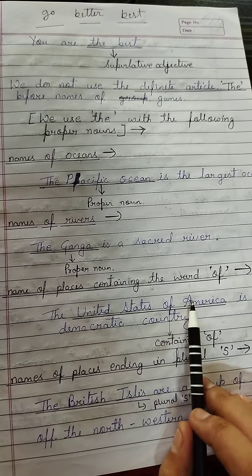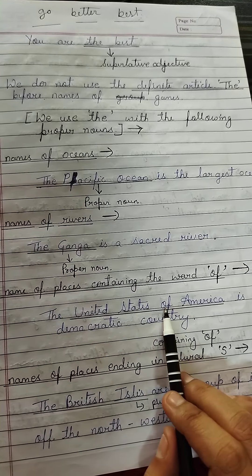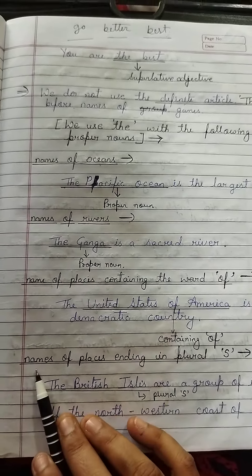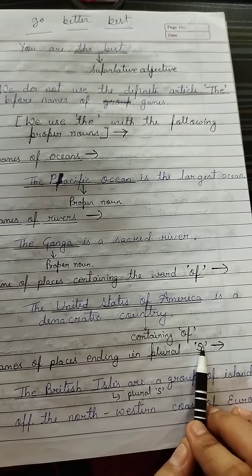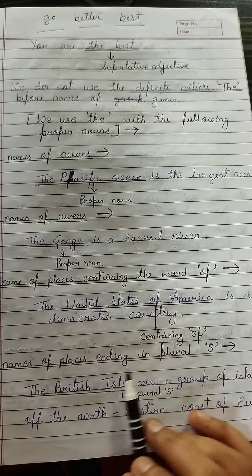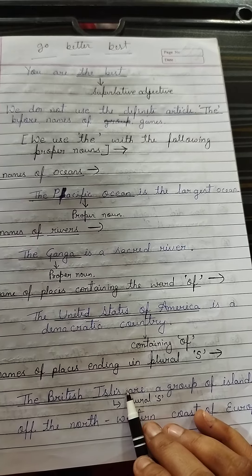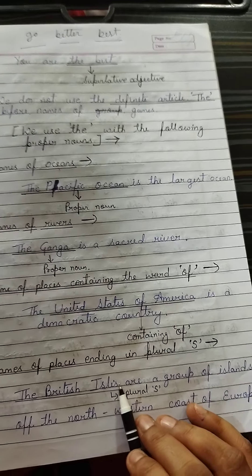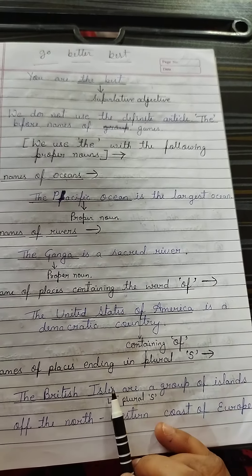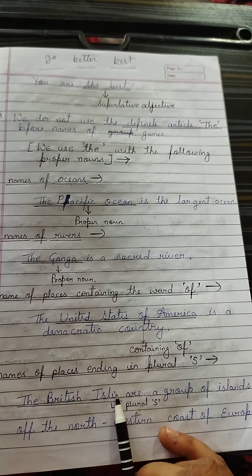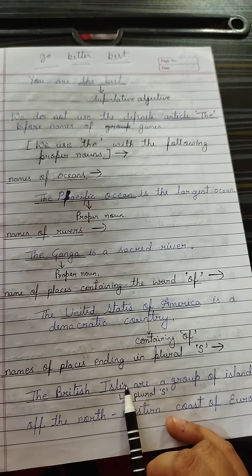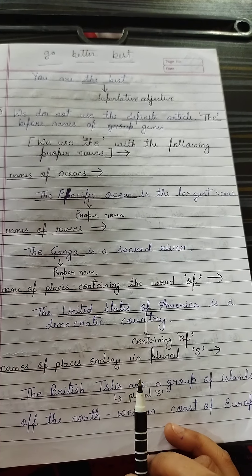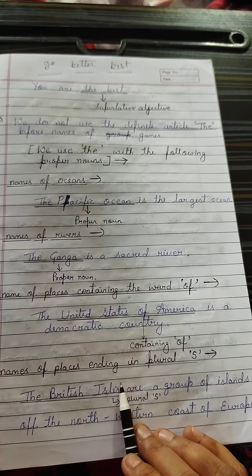Next rule: We use 'the' when there is only one such thing — universal truths or unique objects. For example: the moon, the sun. The sun is one; the moon is one. These things cannot change. So when there is only one such thing in existence, we use 'the' before it — the moon, the sun.